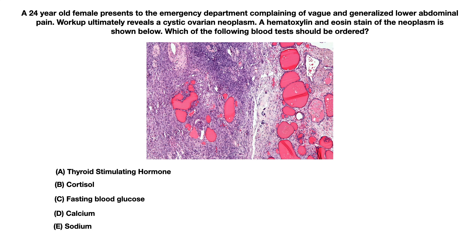A 24 year old female presents to the emergency department complaining of vague and generalized lower abdominal pain. Workup ultimately reveals a cystic ovarian neoplasm. A hematoxylin and eosin stain of the neoplasm is shown below. Which of the following blood tests should be ordered? A: thyroid stimulating hormone, B: cortisol, C: fasting blood glucose, D: calcium, or E: sodium.